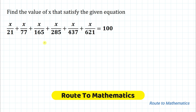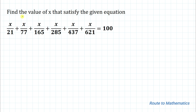Hi everyone, welcome to Root 2 Mathematics. In this video we are going to solve this interesting question. We are given: find the value of x that satisfies the equation x/21 + x/27 + x/165 + x/285 + x/437 + x/621 = 100.